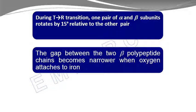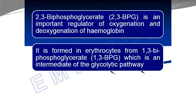The process of oxygen binding to hemoglobin is regulated by an important regulator called 2,3-bisphosphoglycerate, in short 2,3-BPG. It regulates the oxygenation and deoxygenation of hemoglobin. 2,3-BPG is formed in erythrocytes from 1,3-bisphosphoglycerate, which is an intermediate of glycolysis if you have studied carbohydrate metabolism.